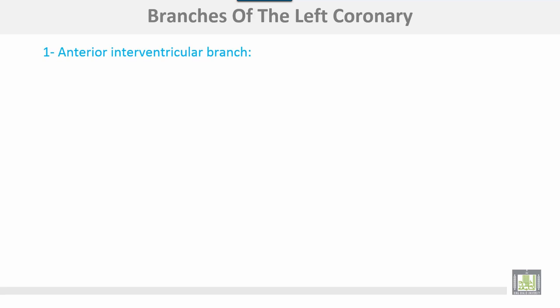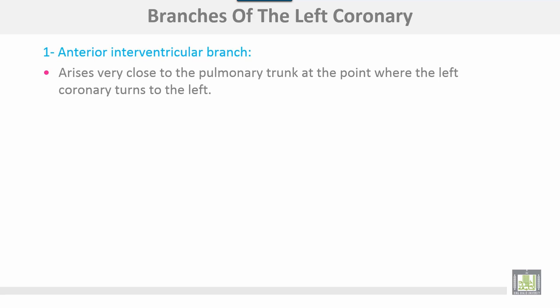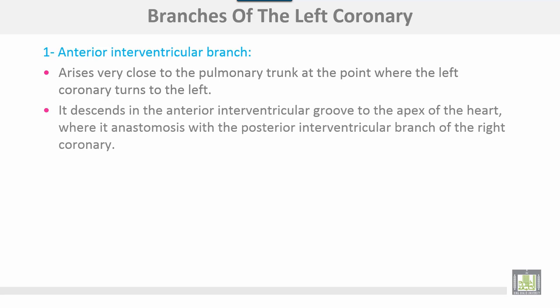The branches of the left coronary: number one, the anterior interventricular branch arises very close to the pulmonary trunk at the point where the left coronary turns to the left. It descends in the anterior interventricular groove to the apex of the heart, where it anastomoses with the posterior interventricular branch of the right coronary.